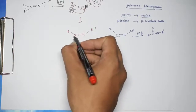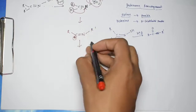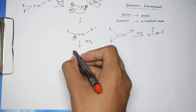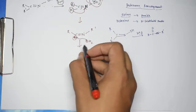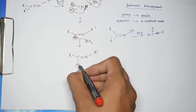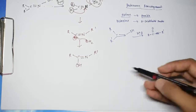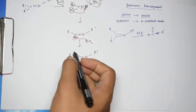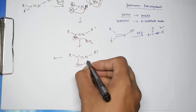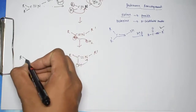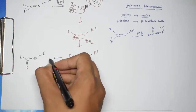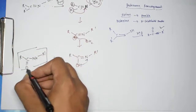Once this carbocation is formed, water (OH₂) attacks it. This gives us R–C=N–R' with OH attached. After tautomerism, the H migrates so that the final product is R–C(=O)–NH–R' — an N-substituted amide. This is the final compound formed.